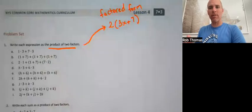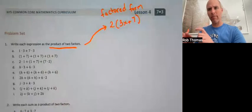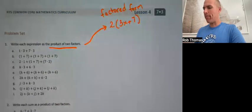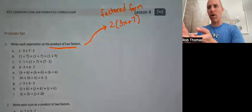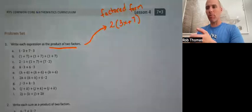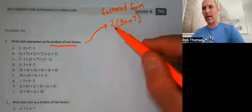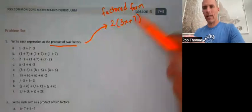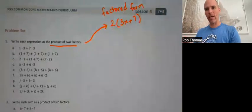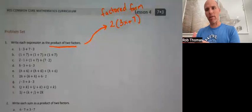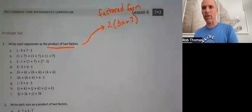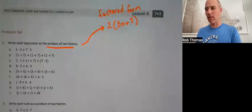Product means to multiply two or more things, and factors are just the things being multiplied. In this case, 2 is a factor and the quantity in parentheses 3x plus 7 is also a factor — they're being multiplied, so it's a product of two factors, or a factored form expression. Same thing.